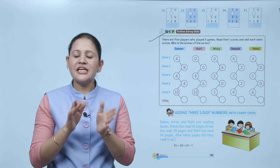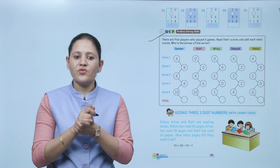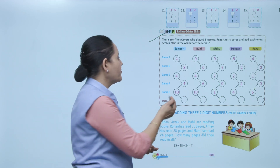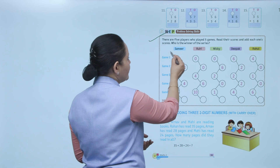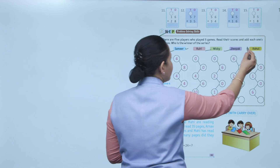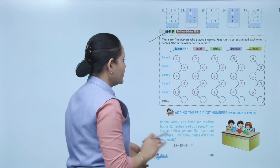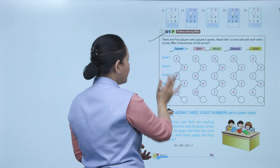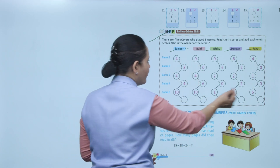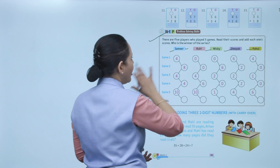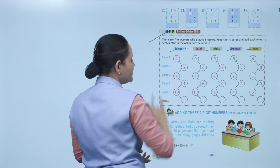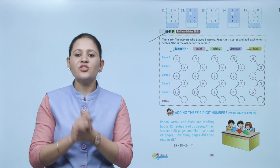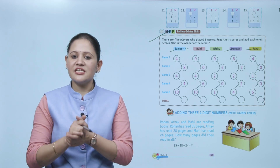Problem solving skills: There are five players who played five games. Read their scores and add each player's total score to find the winner of the series. The players are Samir, Ruhi, Nikki, Deepak, and Rahul. Add all five game scores for each player — whoever has the highest total runs will be the winner. This activity you have to do by yourself.